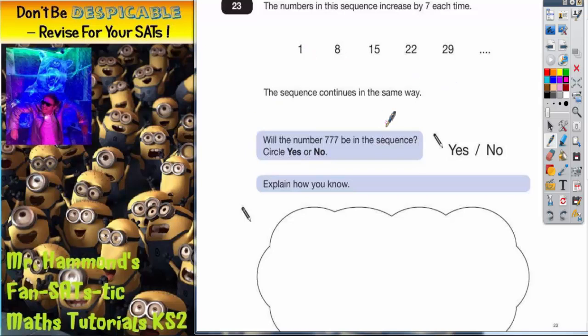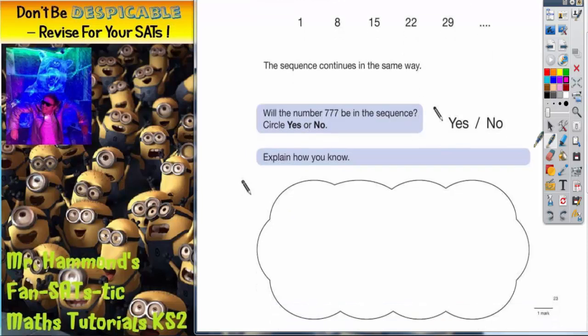The sequence continues in this way. Will the number 777 be in the sequence? Circle yes or no. But we can't just guess. If we just guess yes or no, even if we're right, without an explanation, they're not going to give us any marks. So we've got to have some sort of explanation.